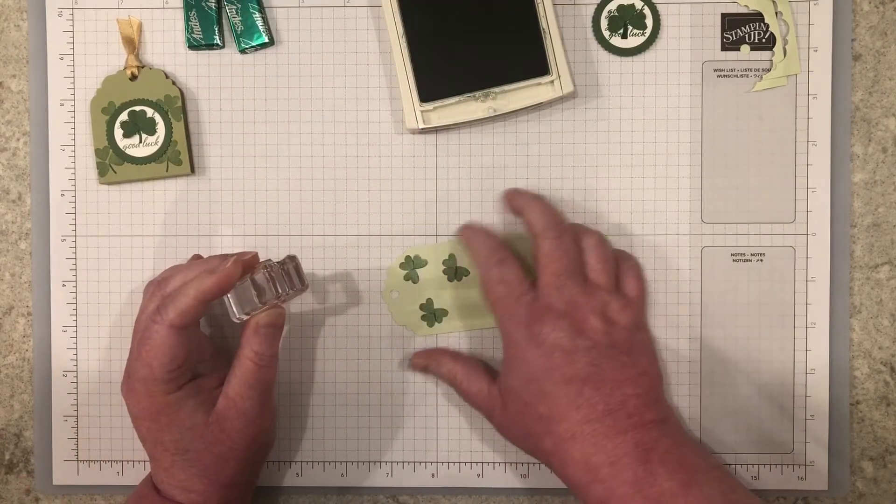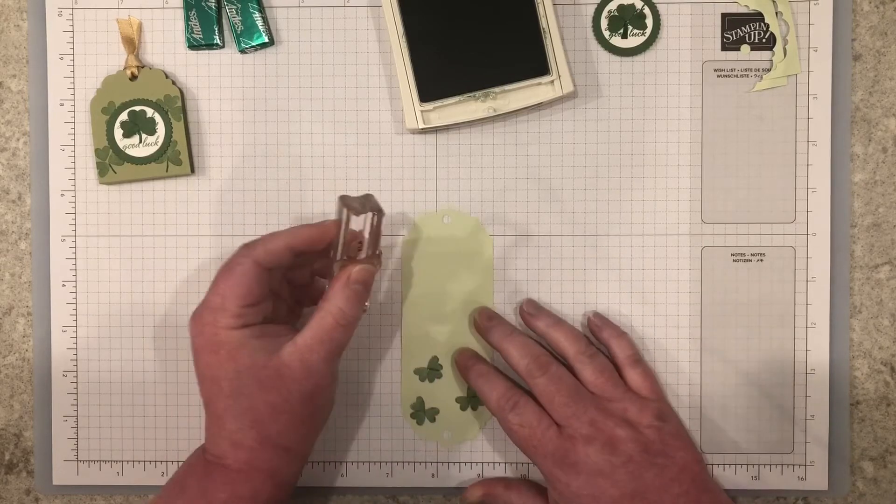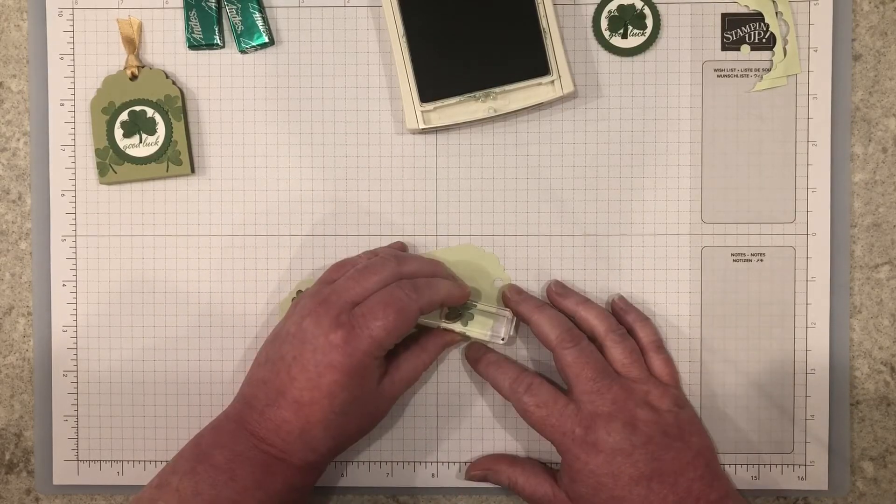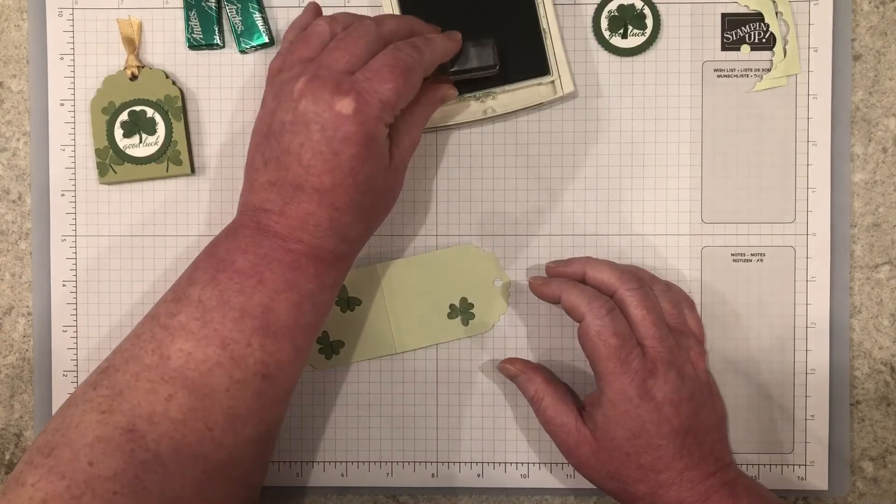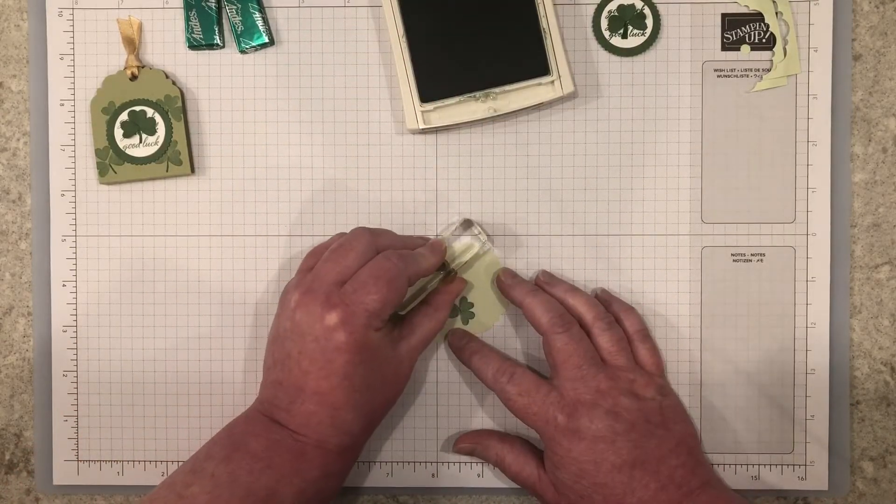I'm going to rotate this upside down and orient my treat holder upside down so that when I stamp my shamrocks and close up the treat holder, they will be upright instead of upside down.